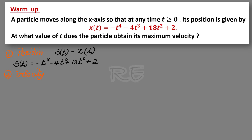The velocity v of t is equal to the instantaneous rate of change of the position function, the derivative of the position function, x prime of t.